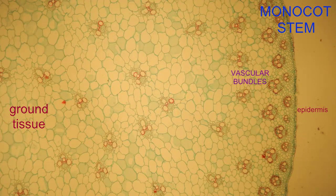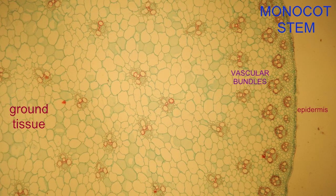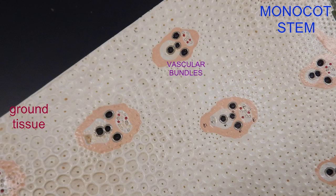In monocot stems, one can observe in the ground tissue, which is surrounded by the epidermis, vascular bundles of xylem and phloem dispersed throughout the stem.